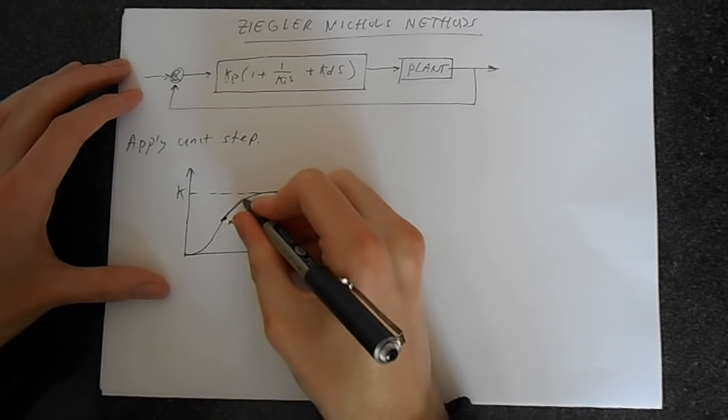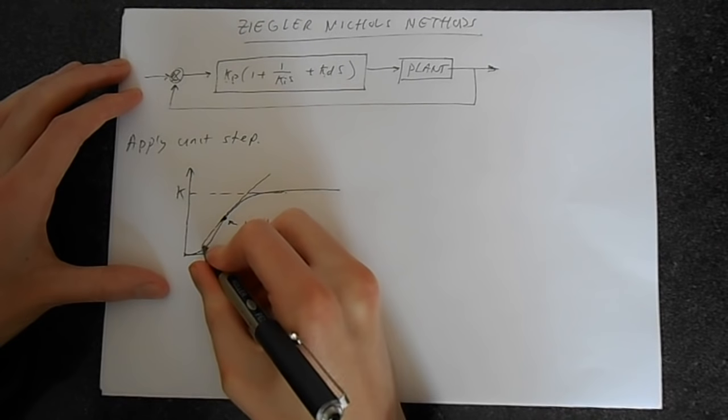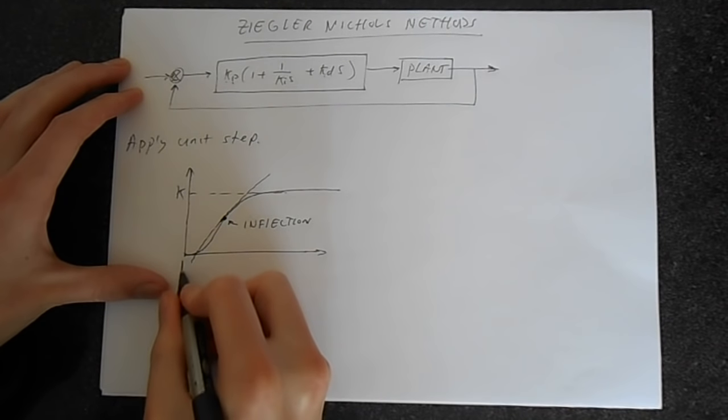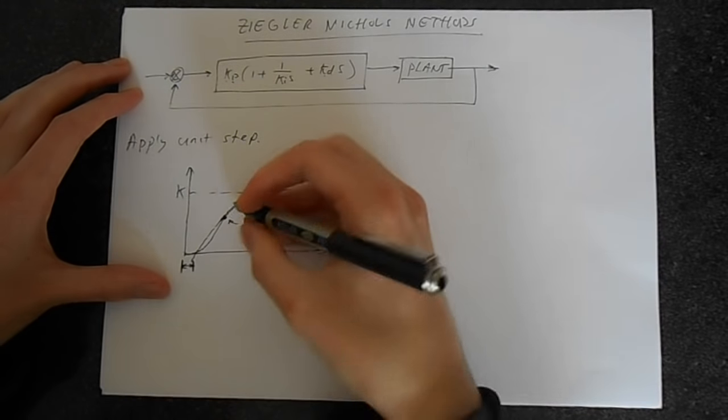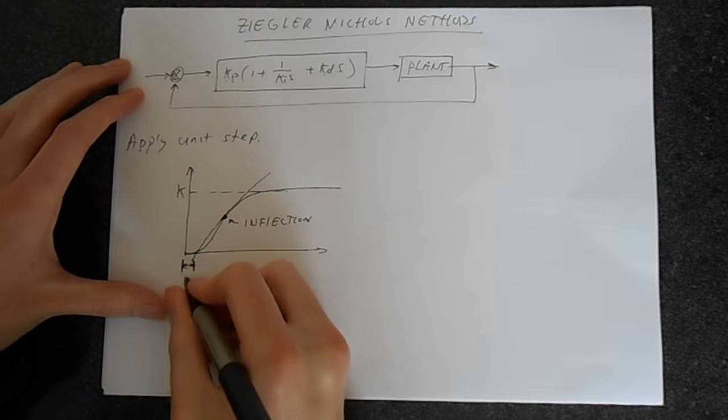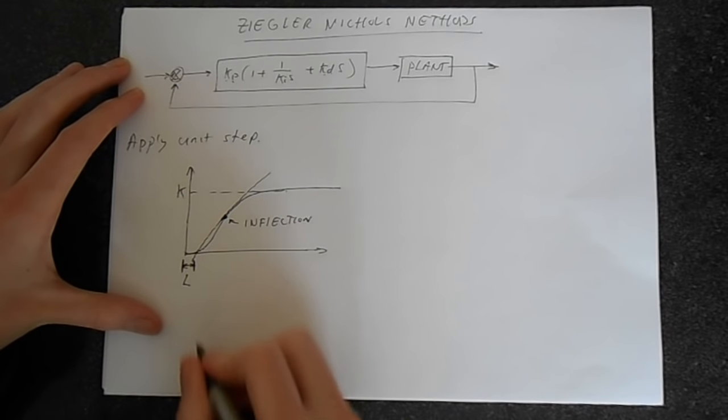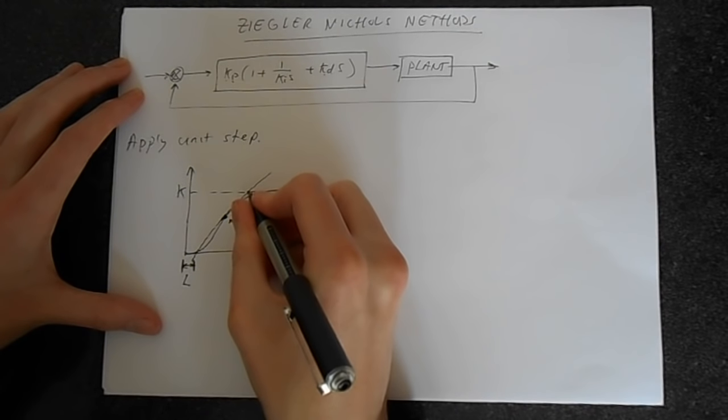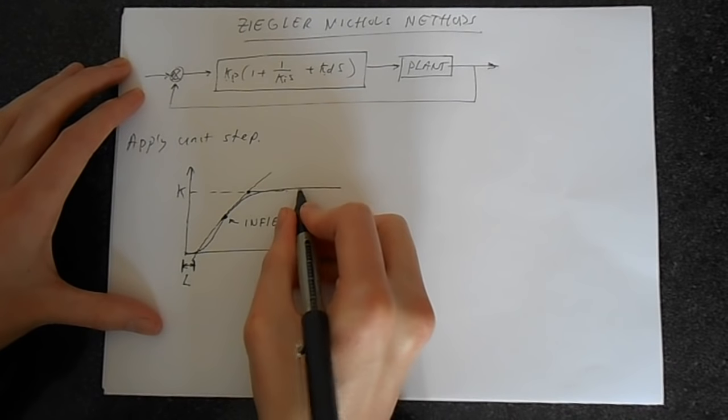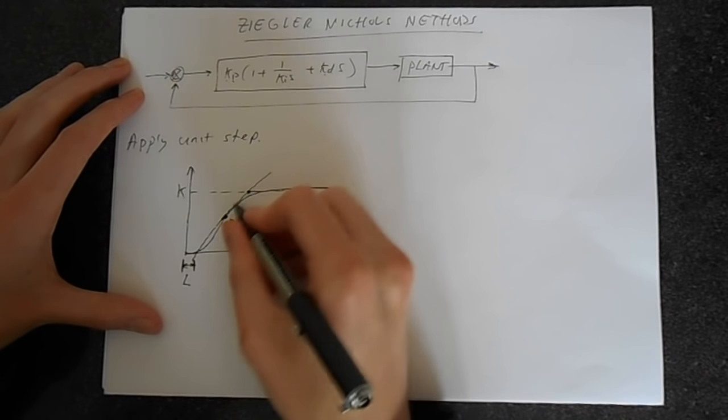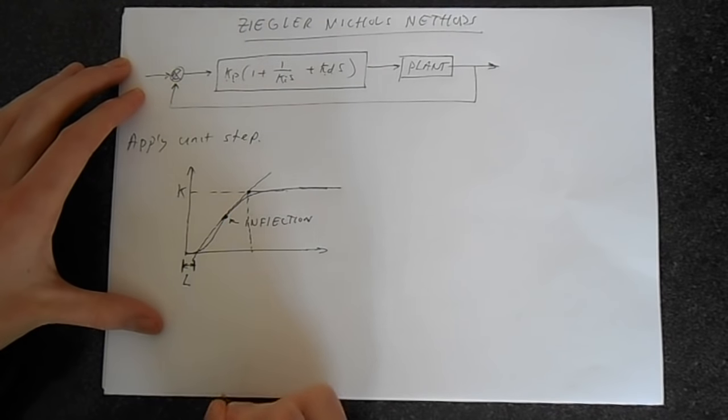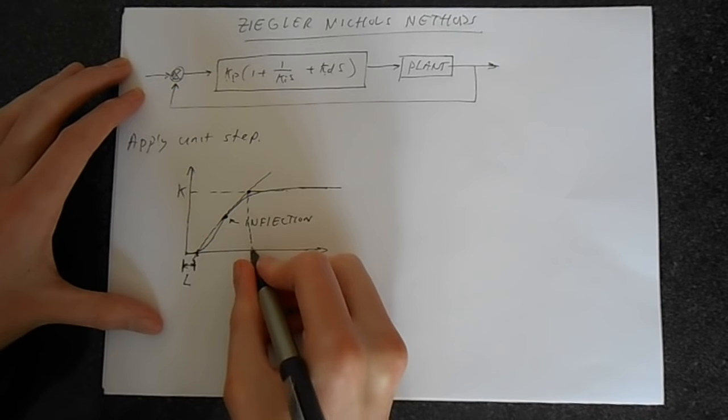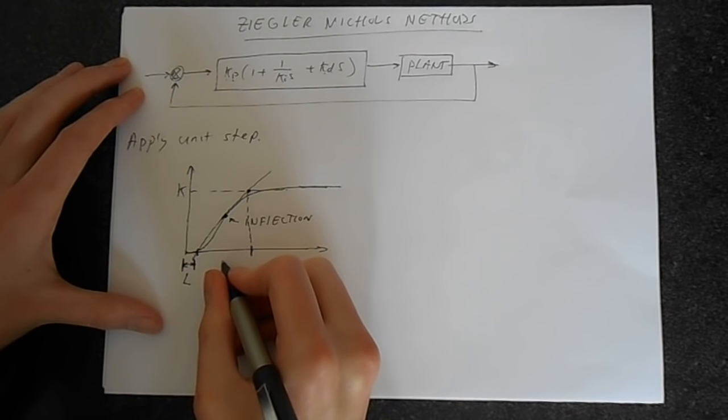So draw a tangent to this inflection point, something like this. And this distance in here, from the origin to that tangent line, we're going to call this distance L. And then if we come from where this line here, which comes along from this steady state, intersects with the tangent line, drop a vertical line down there. And from this point to this point, we can call this distance T.